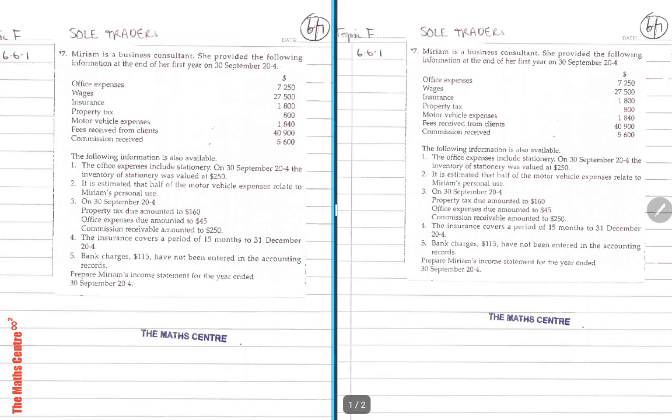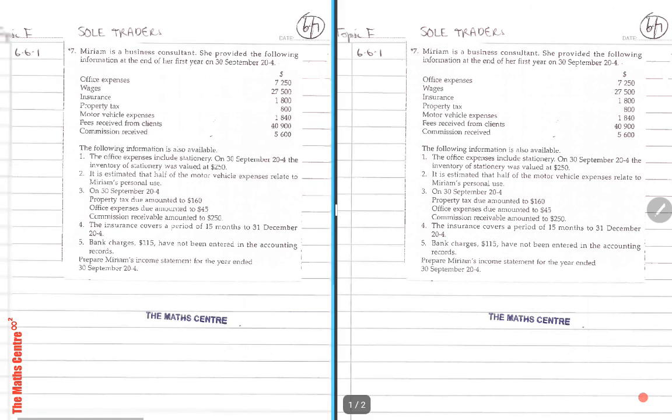Welcome back boys and girls. This is a continuing series on topic F 6.6.1. This topic examines sole traders accounts. Now I split the screen into two so the question remains on the right because there's a lot of information, a lot of numbers, and I will work using the left screen.